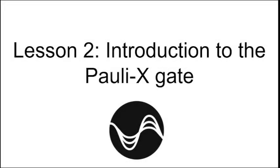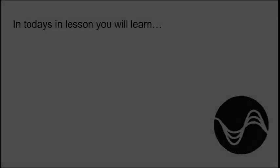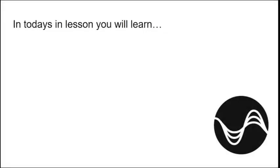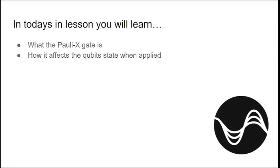Hello everyone, welcome to lesson two of the introduction to quantum computing series. Last time we looked at just installing Qiskit, and in today's lesson we're going to look at the Pauli-X gate. So in today's lesson you will learn the following: what the Pauli-X gate is, how it affects the qubit state when applied, and how to implement the gate in Qiskit.